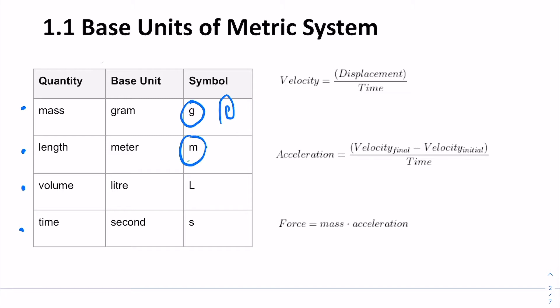Volume — our base unit of volume is the liter, shown with an L. It's also equal to meters cubed, because volume, as we remember from geometry, is length times width times height. Time is measured in seconds, just like the English system. One difference in the metric system is that we use prefixes in base 10 instead of using minutes and hours.